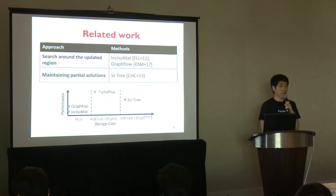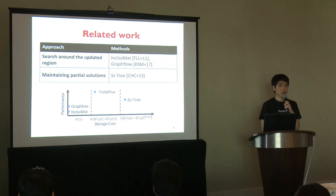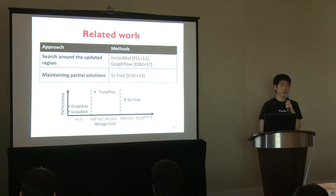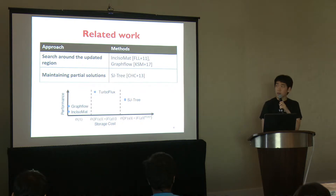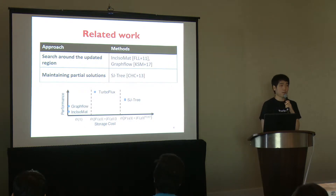In order to support continuous subgraph matching, some systems like IncIsoMat, GraphFlow, and SJ3 are proposed. When a data graph is updated, IncIsoMat and GraphFlow search only the small part of the data graph around where the update occurs. However, their performance is limited because whenever a data graph is updated, they should start matching from scratch. The other system, SJ3, shows better performance than IncIsoMat and GraphFlow because SJ3 materializes partial solutions and uses them to find positive matches for later updates.